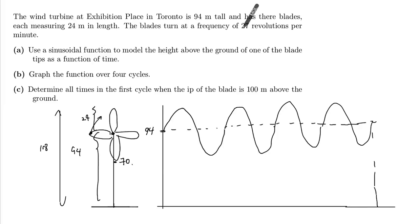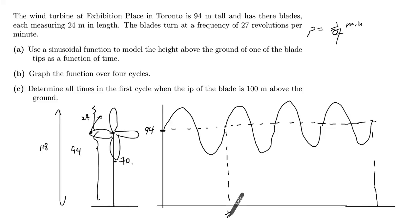The period, because the frequency is 27 revolutions per minute, the period is going to be 1 over 27. So 1 revolution, how long does it take? You have to do 1 divided by 27 revolutions per minute, which gives you 1 over 27 of a minute. So that's how long it takes to do 1 rotation, 1 full cycle. So that means that right there is 1 over 27.